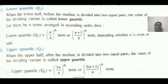For upper quartile, that is Q3, you have the formula. If N is even, that is 3N by 4 term, or for odd value of N, it is 3 bracket N plus 1 by 4 term.